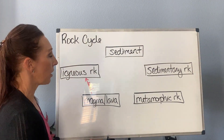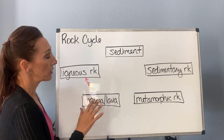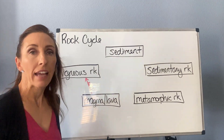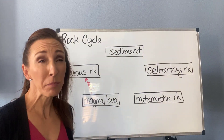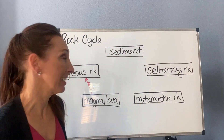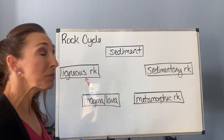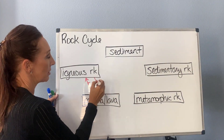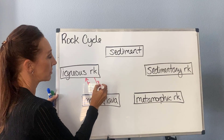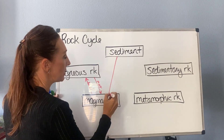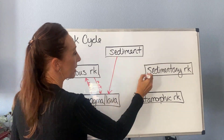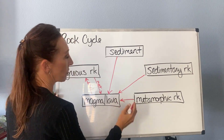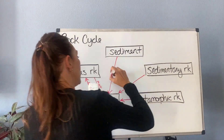Now we can think about what generates magma and lava — it's just melted material, so you can melt anything. I can melt igneous rock, I can melt sediment, I can melt sedimentary rock, and I can melt metamorphic rock. So we put the word 'melt' on all of these arrows.